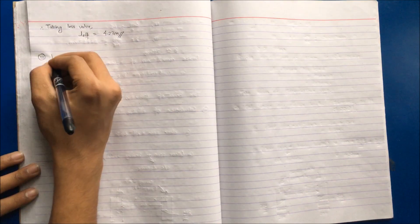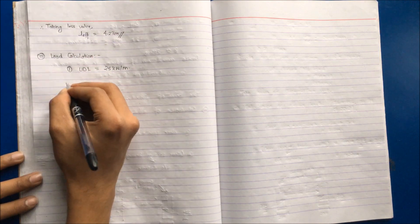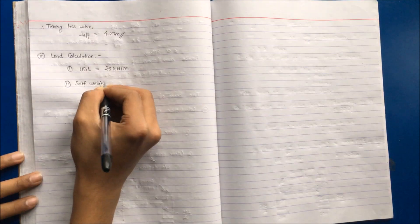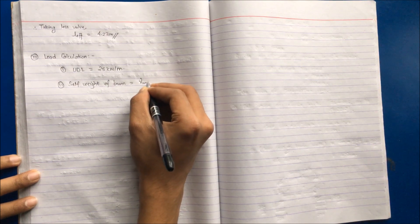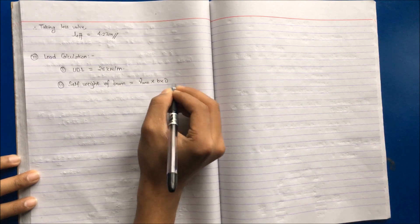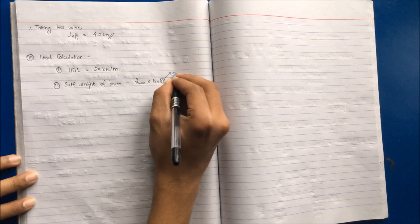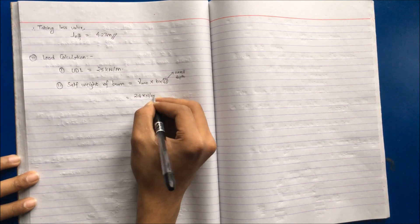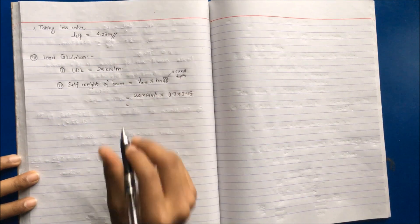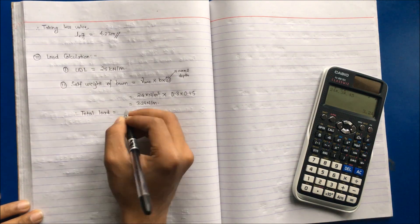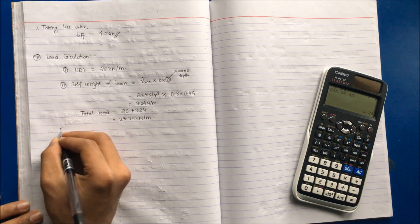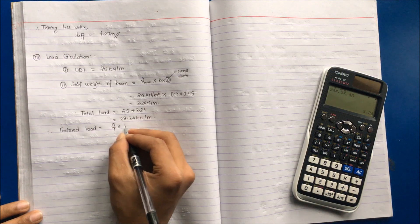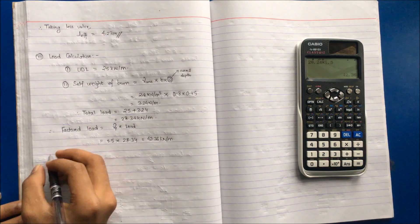Third step is to calculate the load. UDL is equal to 25 kN per meter. Second is the self weight of the beam. In some questions you are provided with the UDL including the self weight, but for now we have to calculate it separately. Self weight of the beam is equal to gamma concrete multiplied by its area. Gamma concrete into B into D. Make sure while calculating the self weight you will be taking the overall depth. Gamma concrete is taken as 24, multiplied by 0.3 into 0.45 which comes to be 3.24 kN per meter. Total load is 25 plus 3.24 equals 28.34 kN per meter. Factored load is gamma p into load, 1.5 into 28.34 equals 42.36 kN per meter.